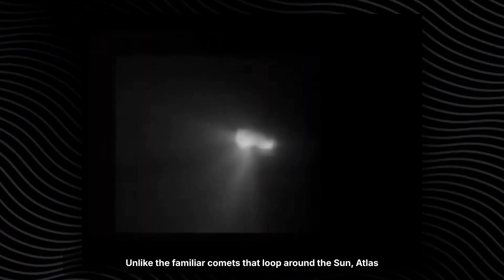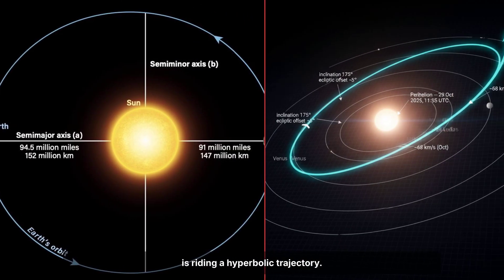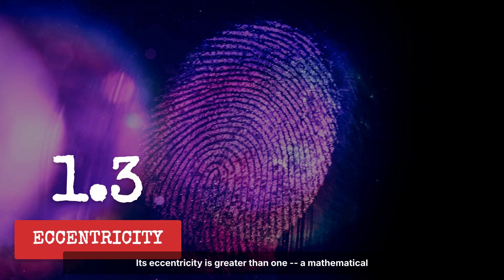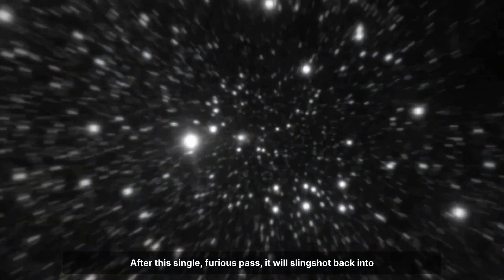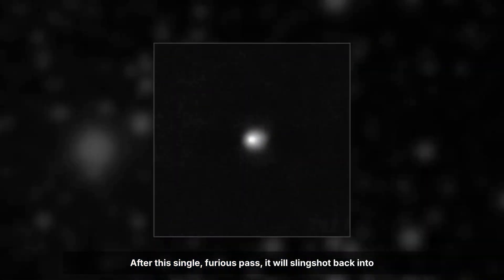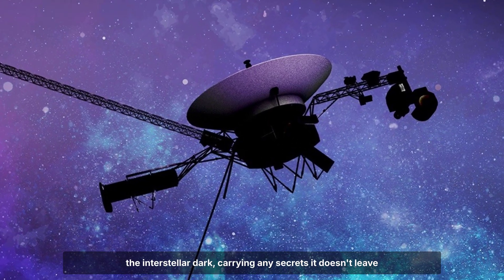But there's a twist. Unlike the familiar comets that loop around the sun, Atlas is riding a hyperbolic trajectory. Its eccentricity is greater than one, a mathematical fingerprint that means it will never return. The sun's grip is not enough to hold it. After this single, furious pass, it will slingshot back into the interstellar dark, carrying any secrets it doesn't leave behind.